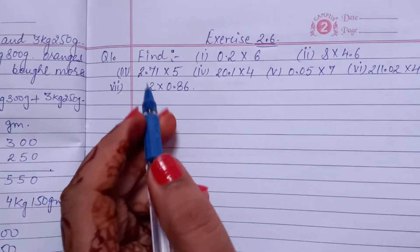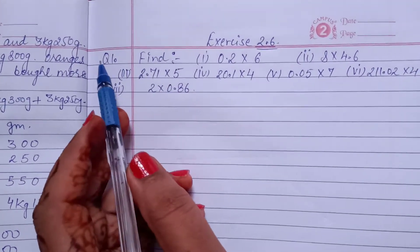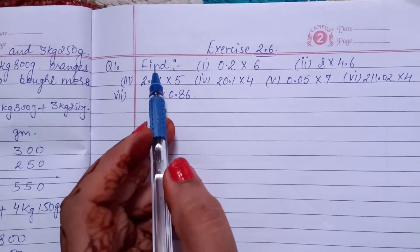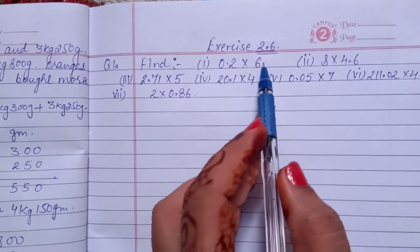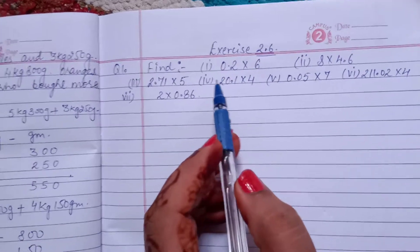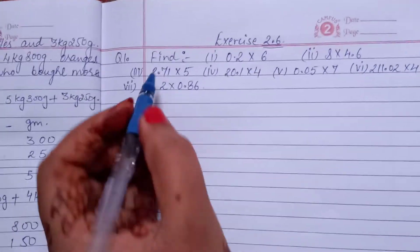Hello students, exercise 2.6, question number first. Find the product with the decimal. We have to find this in this question. Here 7 parts are given.